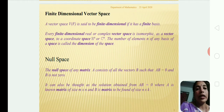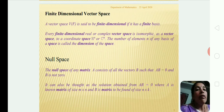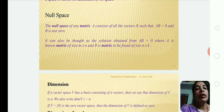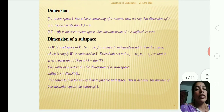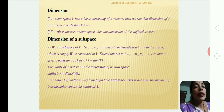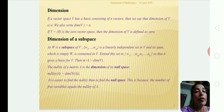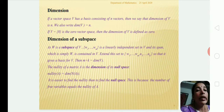A finite dimensional vector space: a vector space V over F is said to be finite dimensional if it has a finite basis. The null space of any matrix A consists of all vectors b such that Ab = 0 and b ≠ 0. Dimension: if a vector space V has a basis consisting of n vectors, then the dimension of V is n. For V = {0}, the dimension is defined as 0.